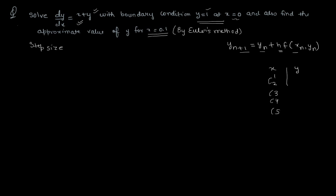You need to make the difference 0.1, but you need to decide how many intervals to use. The more values you take, the more accurate the result. So you can distribute the interval into as many steps as you want. If we assume 5 intervals, then h = 0.02, and the initial value x₀ = 0.